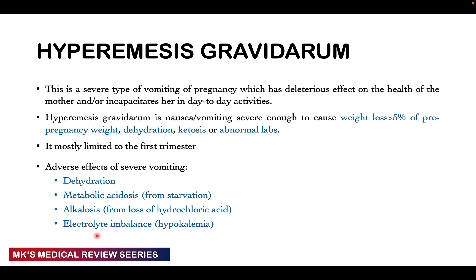Hyperemesis gravidarum is a severe type of vomiting that is a threat to the mother, having negative effects on her health and incapacitating her from carrying out day-to-day activities. It involves nausea and vomiting severe enough to cause weight loss greater than 5% of pre-pregnancy weight, dehydration, ketosis, and abnormal labs. It is most commonly limited to the first trimester. Adverse effects include dehydration, metabolic acidosis from starvation, alkalosis from loss of hydrochloric acid, and electrolyte imbalances — mostly hypokalemia.